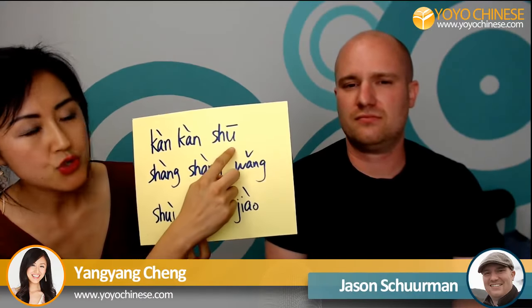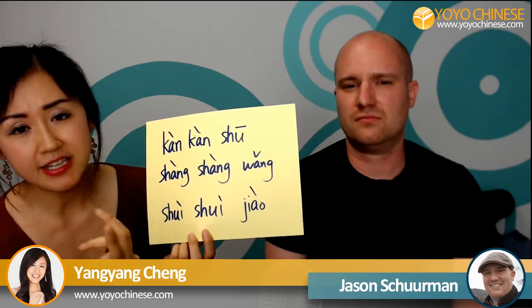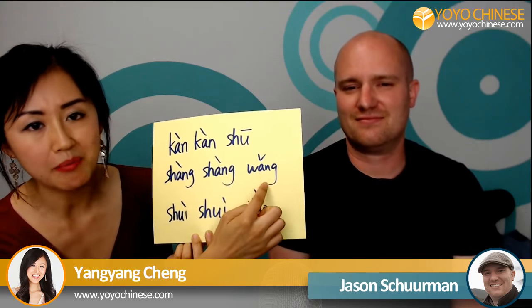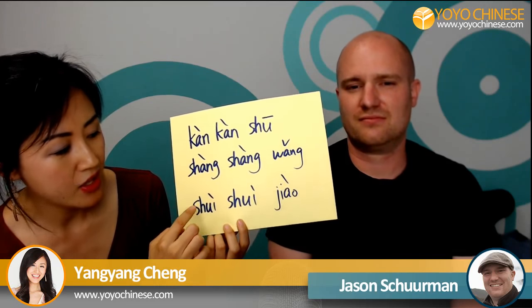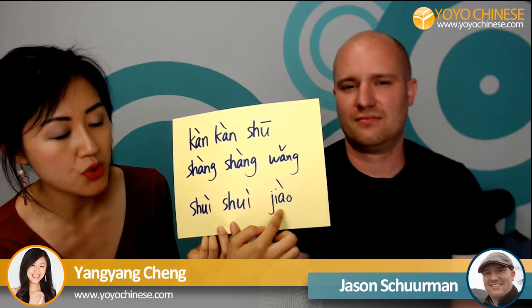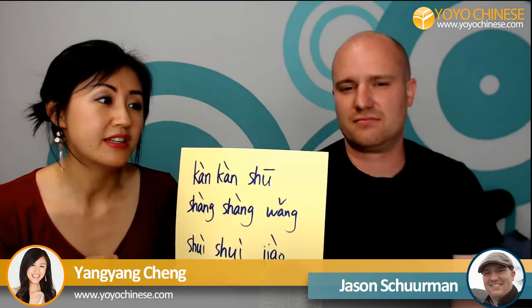What you do instead is double the verb. 看书 (kàn shū, to read) becomes 看看书; 上网 (shàngwǎng, to browse the internet) becomes 上上网; 睡觉 (shuìjiào, to sleep) becomes 睡睡觉. You just double the verb part, and it gives that casual, 'a little bit of this, a little bit of that' feeling — similar to saying 'watch some TV, read some books' in English. These doubled verbs don't translate literally — the doubling is just adding tone, not additional meaning.